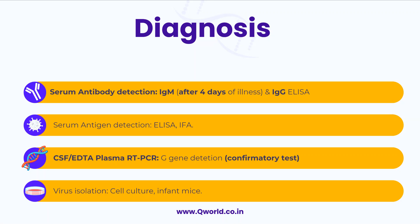To diagnose this condition, there are three or four methods. First, from blood serum we can detect either IgM or IgG antibody against Chandipura virus after four days of illness, or detect antigen using ELISA or immunofluorescence. Second, we can collect CSF or EDTA plasma and perform reverse transcriptase PCR to detect the G gene — this is a confirmatory test. Third, we can isolate the virus in cell culture or in infant mice. The commonly employed methods are antibody detection and PCR on CSF or blood.